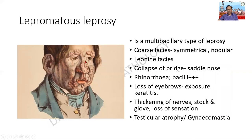There is a saddle nose deformity because of the collapse. Saddle nose can occur in other conditions - in congenital syphilis also, because of collapse of the bridge of the nose. In lepromatous leprosy it is multibacillary - tuberculoid is paucibacillary. Features include coarse symmetrical facies, collapse of the bridge, rhinorrhea, loss of the eyebrows, exposure keratitis, and thickening of the nerves. Strangely, there can also be testicular atrophy because the bacilli thrive in the testis - a cooler area - causing destruction of testosterone, and the patient can present with gynecomastia.